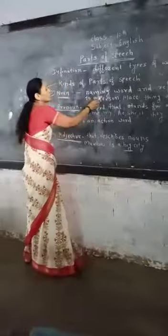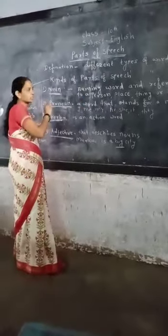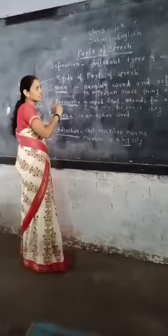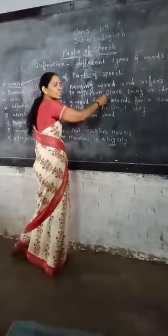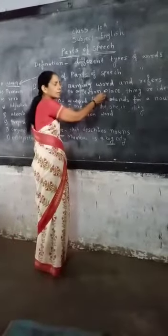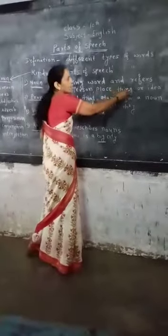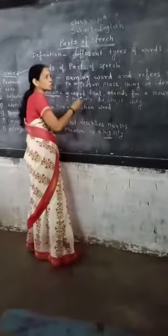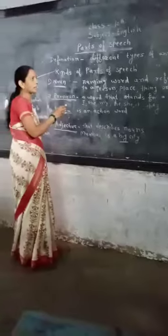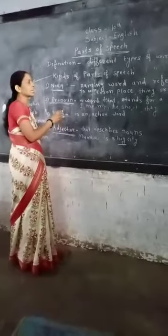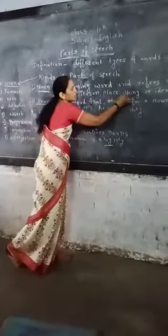A naming word of a person means Ram, Sita — these are the names of persons. Then Mumbai, Singapore — these are the names of places. Then things and ideas: our joys, sorrows — these are our feelings and ideas. And words like table, days, benches — these are things. These words are called nouns.